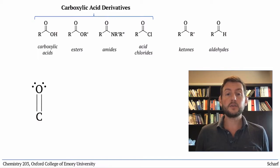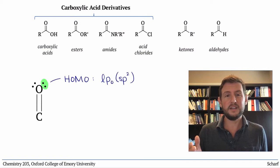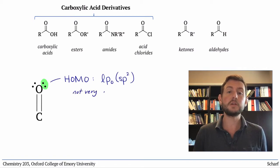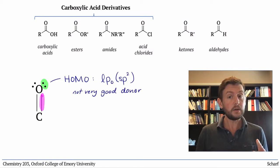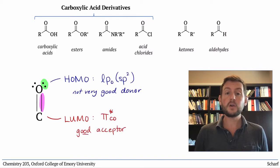The frontier molecular orbitals of the carbonyl group determine its reactivity. Its HOMO is the sp2 hybridized lone pair on oxygen, which is, as nucleophiles go, not very high energy. So carbonyl groups don't usually behave as donors of electrons. Its LUMO is CO pi star, which is quite a good acceptor orbital. So carbonyl groups typically act as electrophiles.